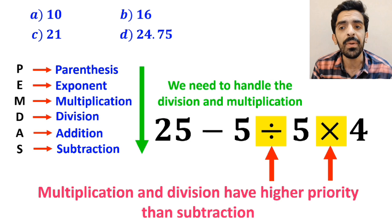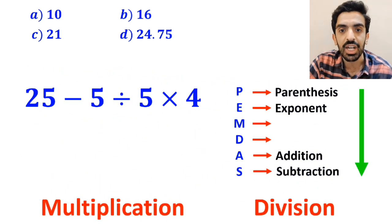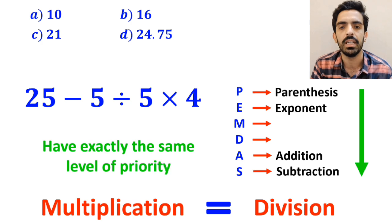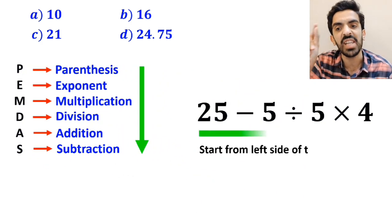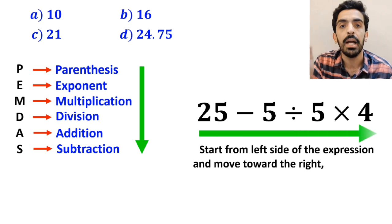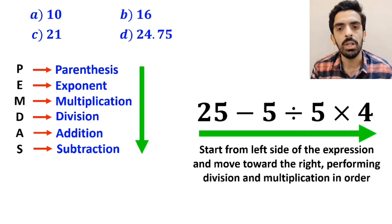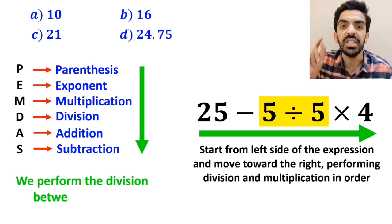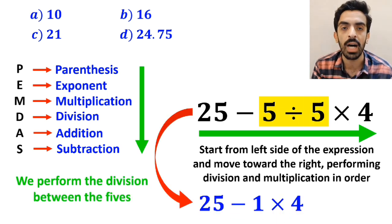However it's very important to note that in the PEMDAS rule multiplication and division have exactly the same level of priority. In this situation the best thing to do is to start from the left side of the expression and move toward the right performing division and multiplication in order. So first we perform the division between the two fives and this expression simplifies to 25 minus 1 then times 4.